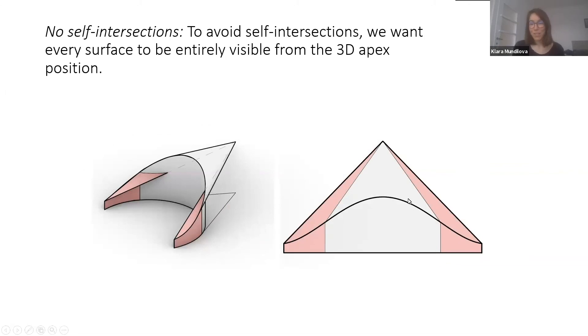Lastly, to avoid self intersections, we want to make sure that all the adjacent surfaces along a vertex are visible from the 3D apex. We do get self intersections if we are not able to see a vertex anymore, and this can be again expressed in terms of linear constraints.